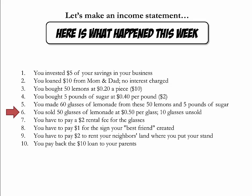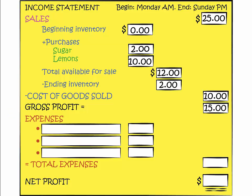The next thing you did was actually sell lemonade. Of the 60 glasses you made, you were able to sell 50 — 10 were unsold and remain in inventory. It is important to include inventory on the income statement because we should only take into account the cost of goods actually sold when calculating net profit. Since we spent $12 to produce 60 glasses, our per-unit production cost was $12 divided by 60, or $0.20 per glass. The 10 remaining glasses are valued at 10 times $0.20, which equals $2.